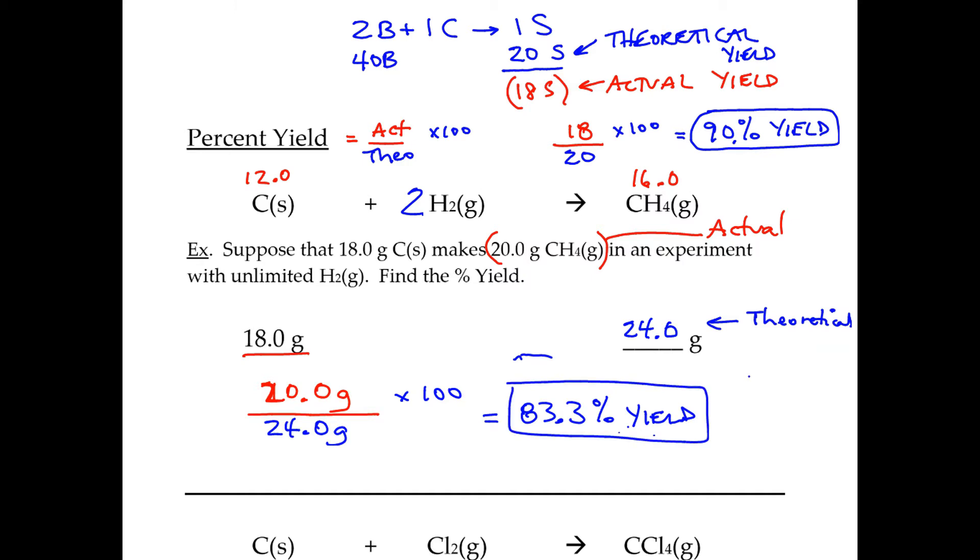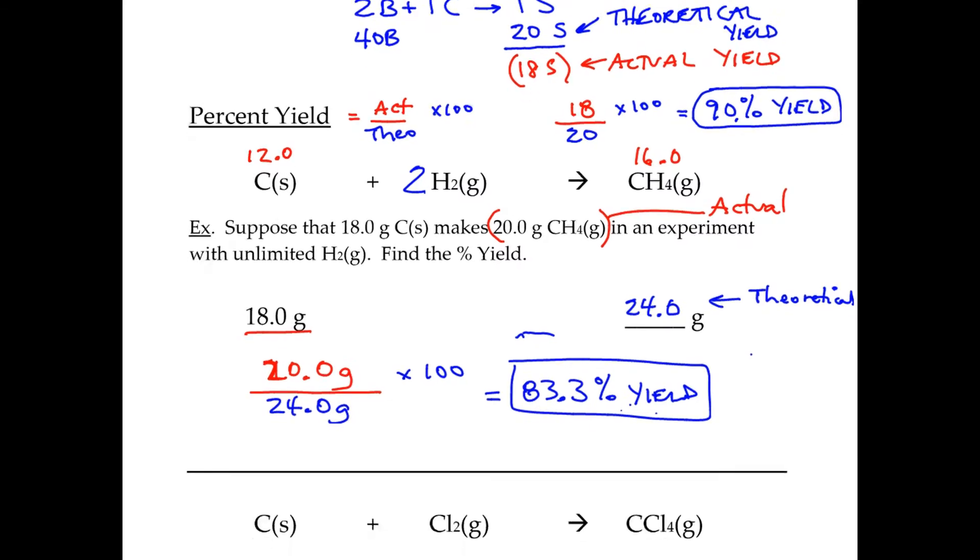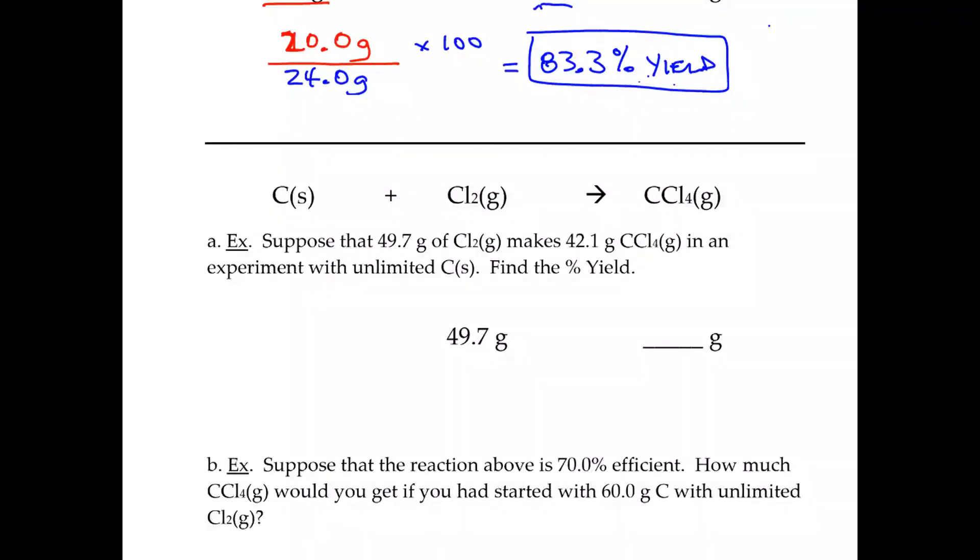Let's try the next problem. If you want, you could pause the video and do it yourself and then see if you got it right. We're going to read this problem and realize that we started off with 49.7 grams of chlorine, and we're trying to make CCl4. Again, this is the experimental, so this would be the actual again.